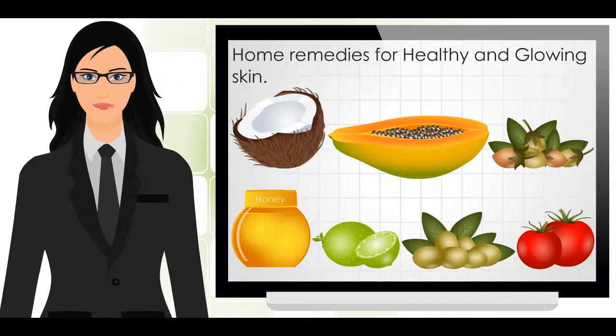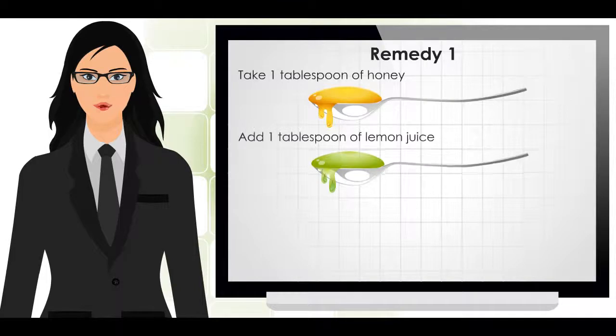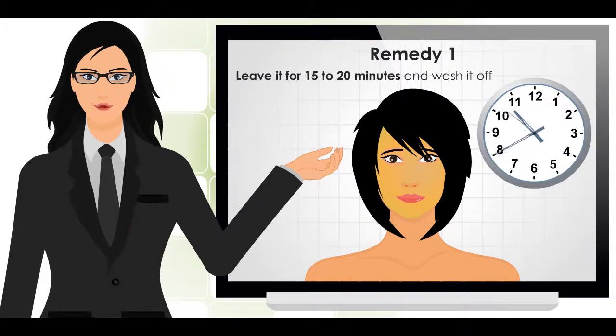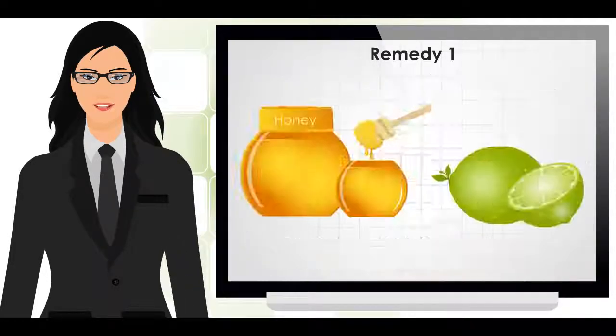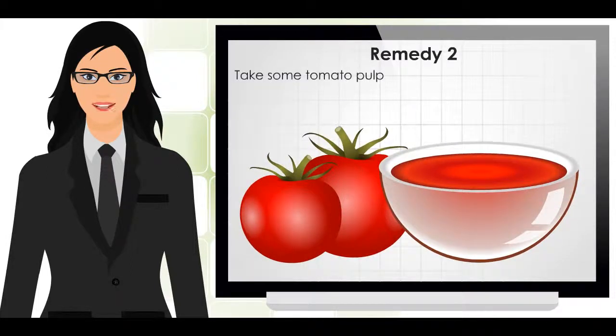Take one tablespoon of honey and add one tablespoon of lemon juice. Mix well, apply it on a moist face, leave it for 15 to 20 minutes, and wash it off. The honey and lemon work as a natural bleach and give an instant glow.